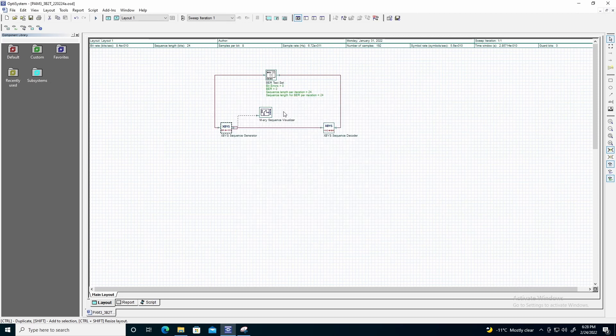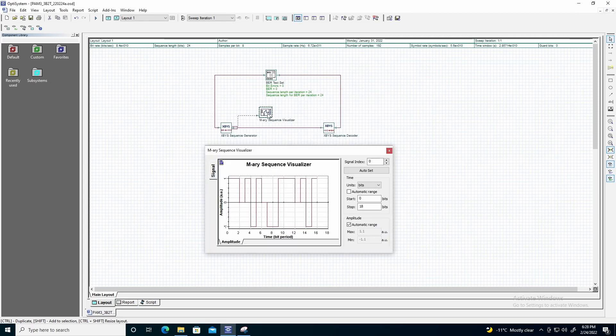This simulation uses 24 bits. Since we encode 3 bits for every 2 symbols, we can see that the expected 16 symbols are in the output sequence. Additionally, we can see that 3 unique symbols are output, which implies that the sequence generator can be used in a PAM3 system.